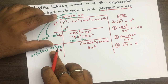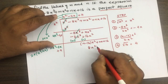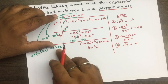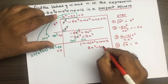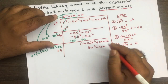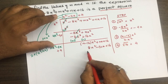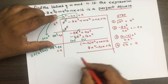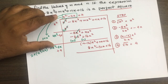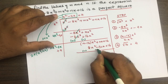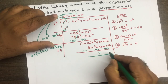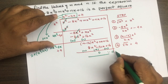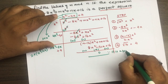Plus 4 into 2x square = 8x square, into minus 8x = minus 32x, plus into plus = plus 16। Perfect square होने की वजह से sign change करके reminder 0 लिख लेंगे, because it is a perfect square।